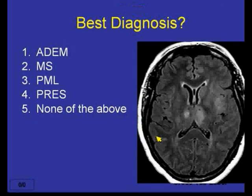The best diagnosis here — would you say it's most likely acute disseminated encephalomyelitis, multiple sclerosis, progressive multifocal leukoencephalopathy, posterior reversible encephalopathy syndrome, or none of the above?